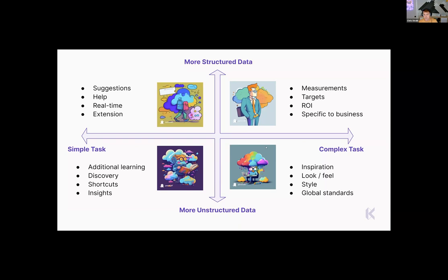Let's talk about what that looks like in our app right now. Chatbots, suggestions, and generation — being able to get questions answered that summarize huge amounts of information. Finding out 'what voice and tone should I be using here?' or 'does this statement align with our voice and tone docs?' — that's the Librarian piece. Also having a lot of the right context around the wealth of knowledge about design systems in general being there to back you up.